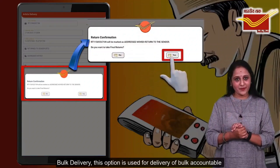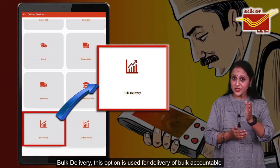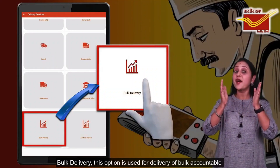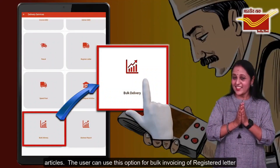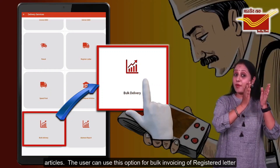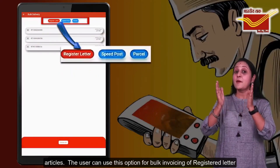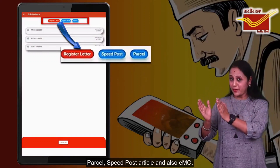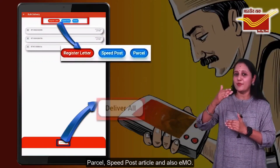Bulk Delivery: This option is used for delivery of bulk accountable articles. The user can use this option for bulk invoicing of registered articles, parcels, Speedpost articles and also EMO.